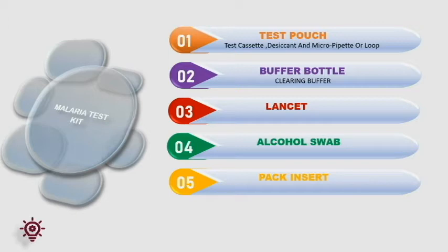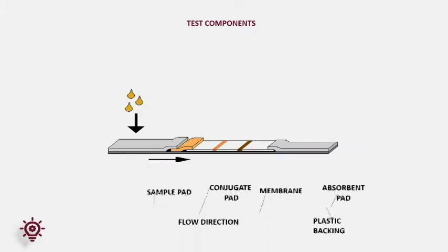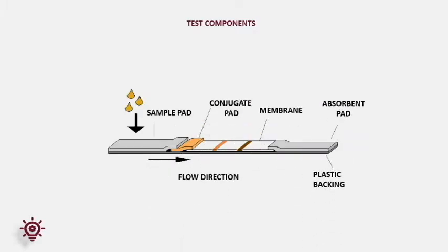Sometimes a positive control is also provided with the kits. The cassette consists of a top and bottom, and a strip. The strip consists of a coated membrane, gold pad, sample pad, and absorbent pad.